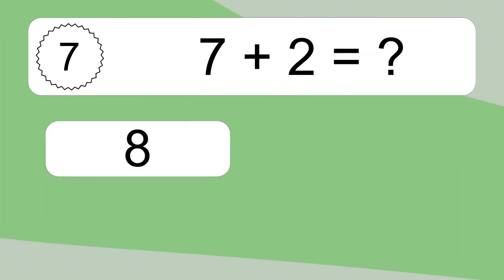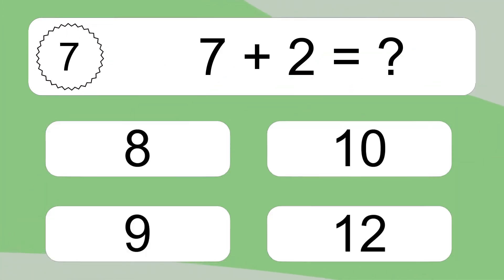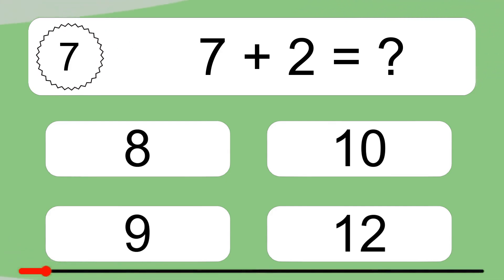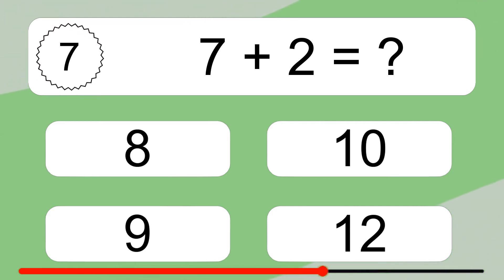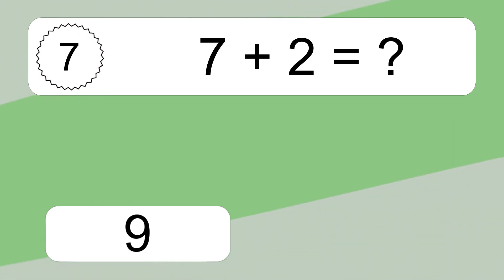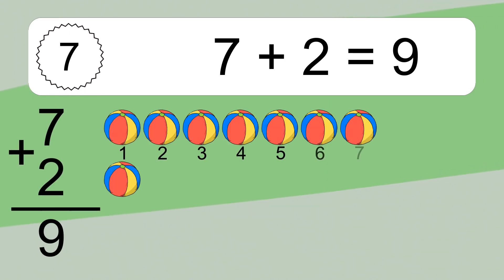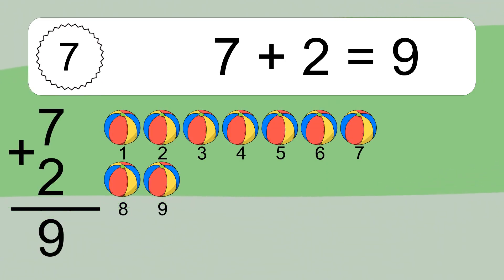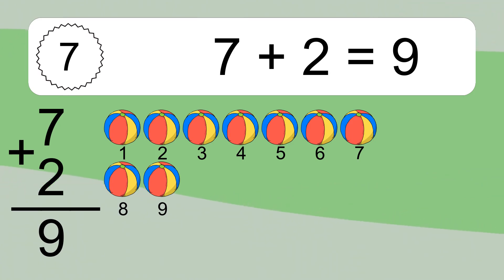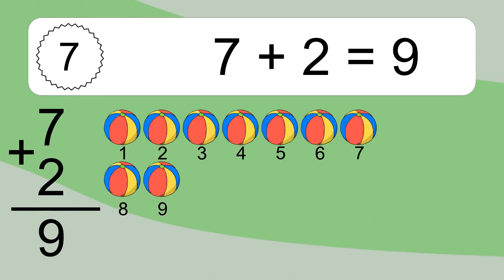7 plus 2 equals what? 7 plus 2 equals 9. Let's count it. 1, 2, 3, 4, 5, 6, 7, 8, 9.